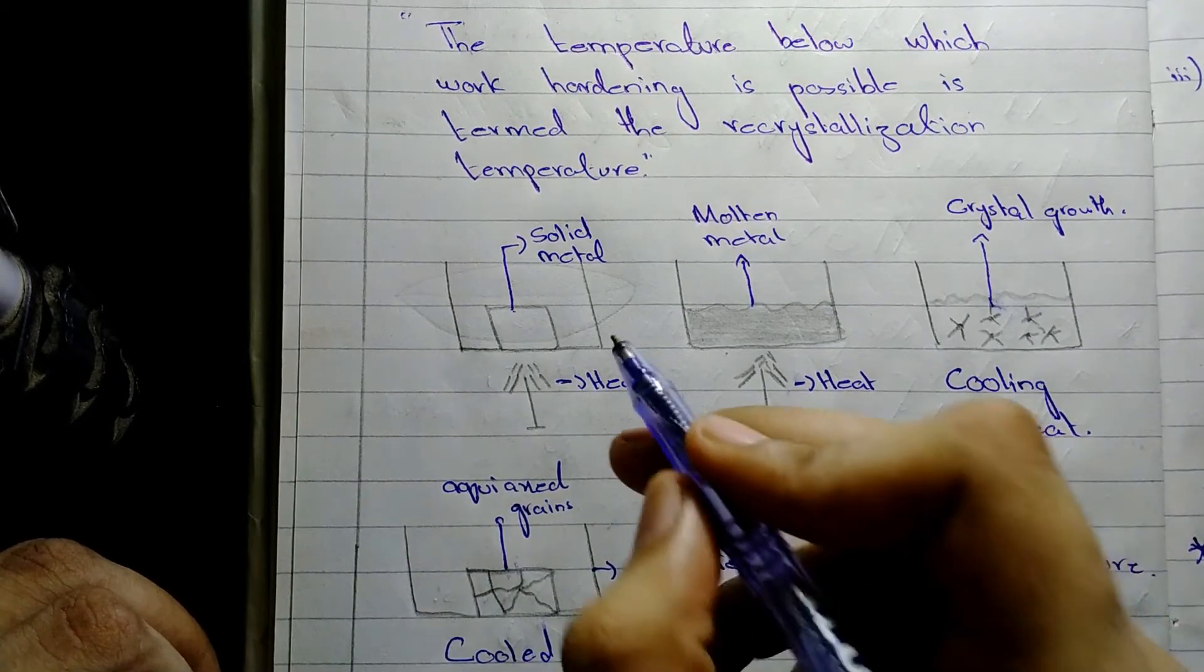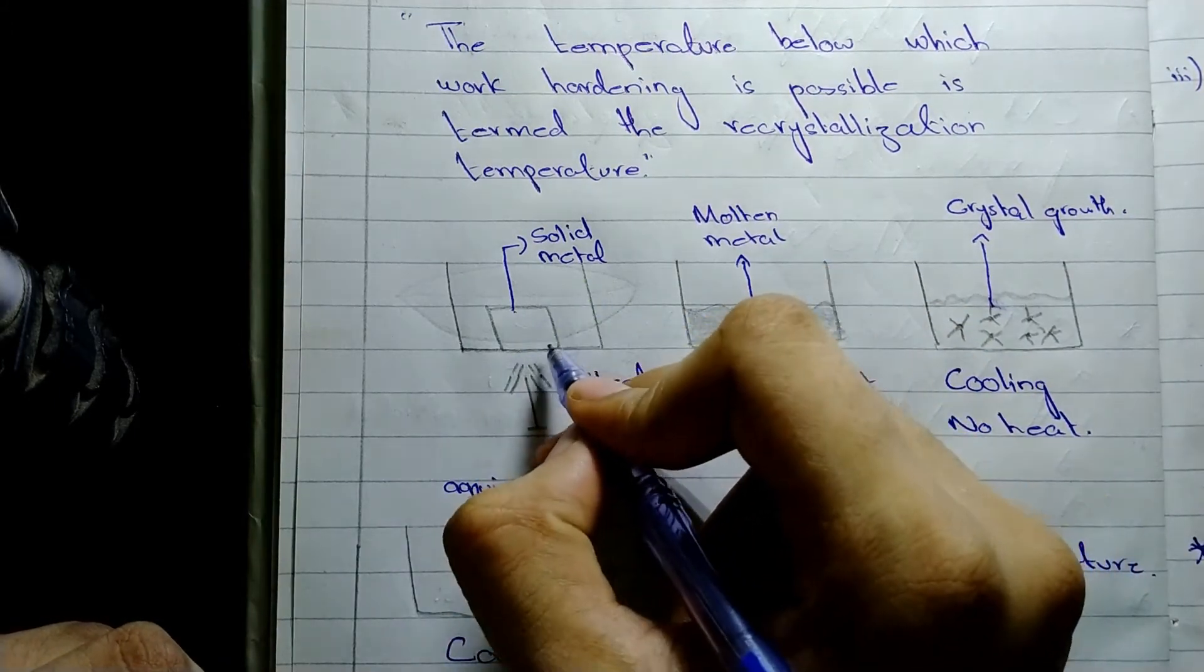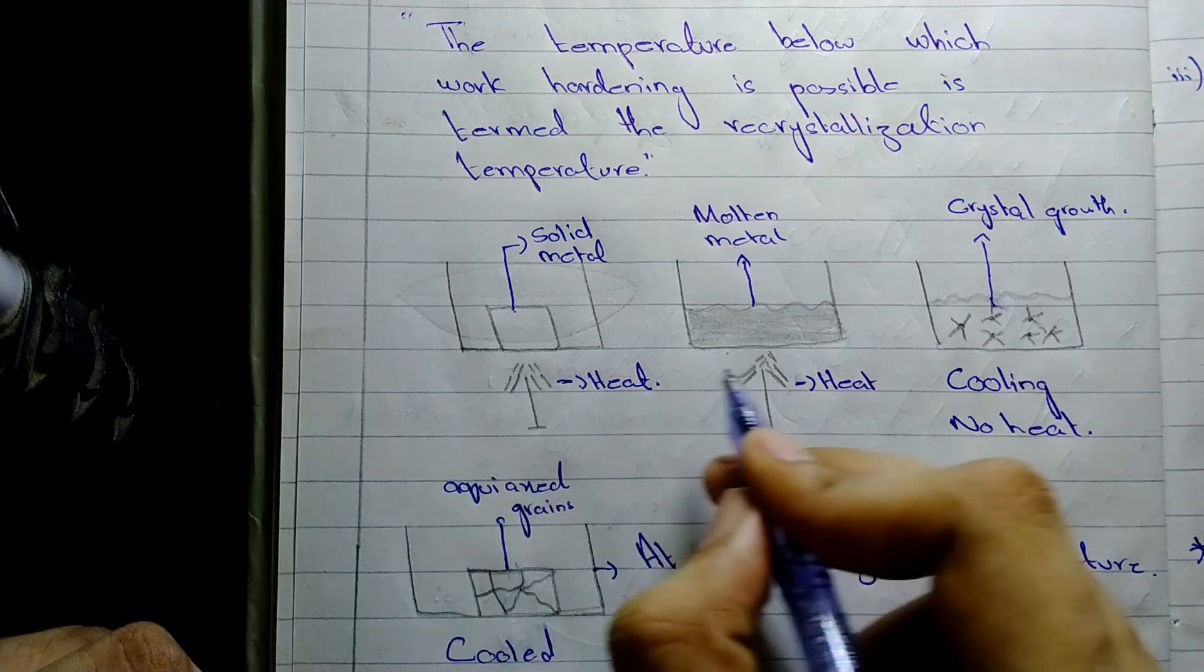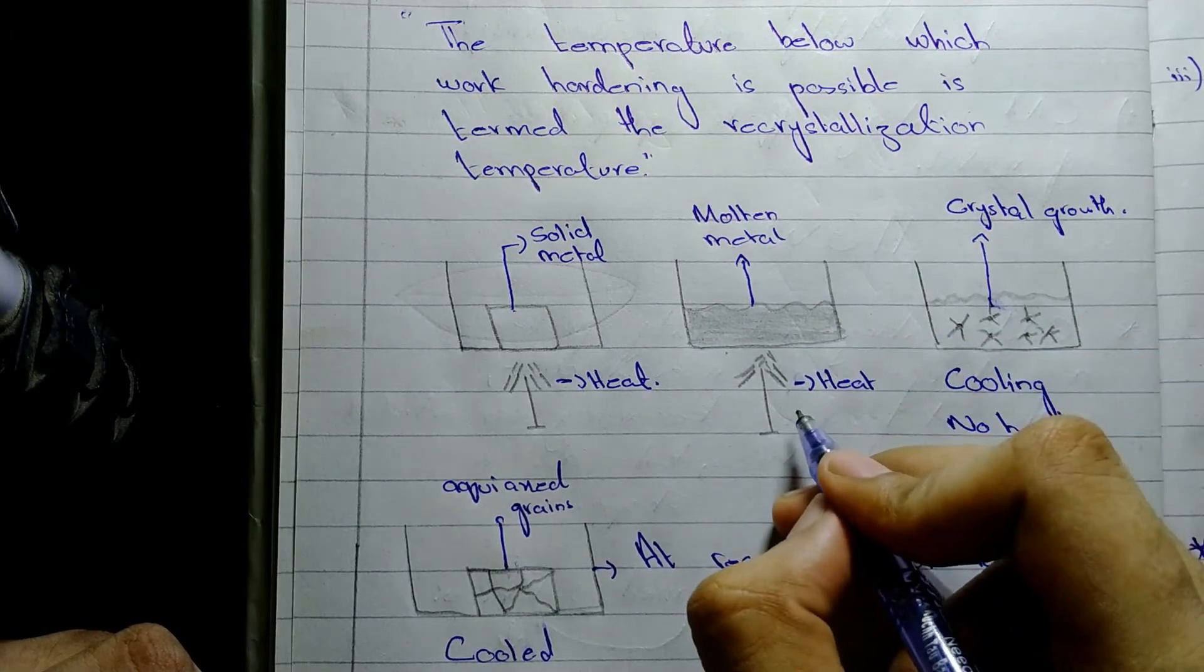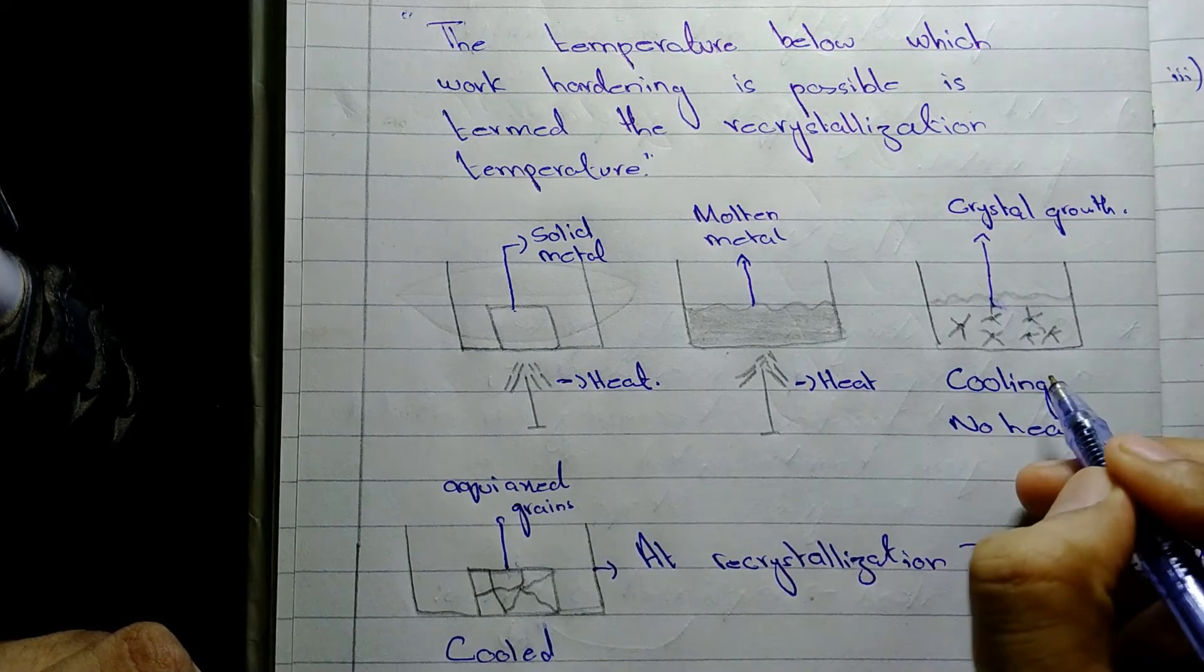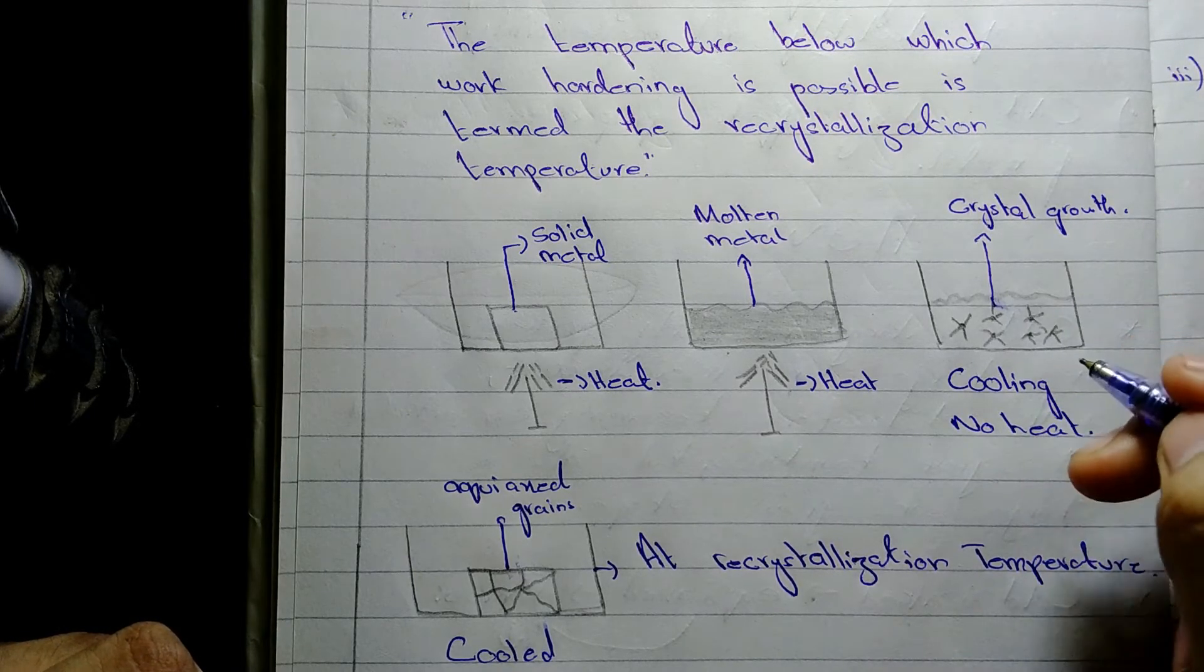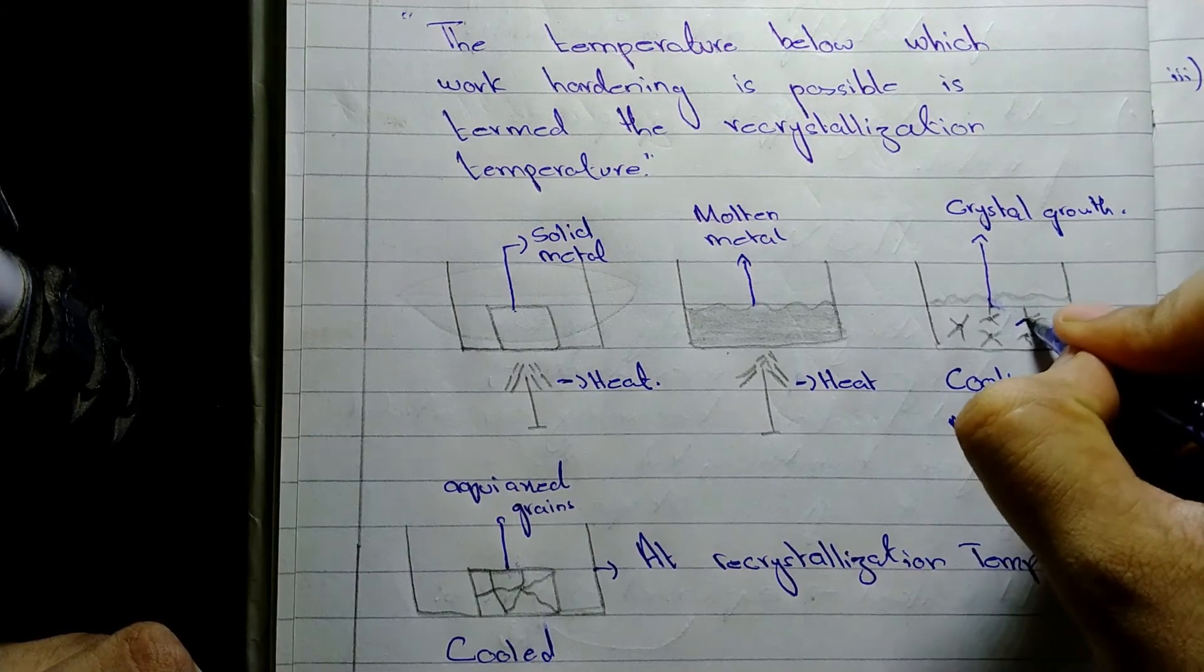So now look at this first diagram. It has a solid metal block and we are giving it heat. So as we have given the heat to the block of metal, it has melted in figure B. So this is now the molten metal and we are still applying the heat. And now thirdly in figure C, we are not applying the heat and we allowed the molten metal to be cooled. As the molten metal is about to cool, we can see here the crystal growth.